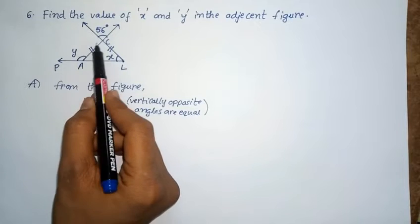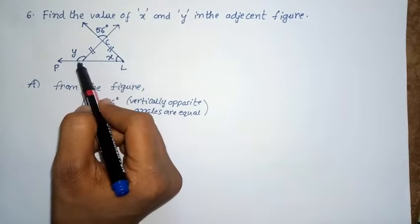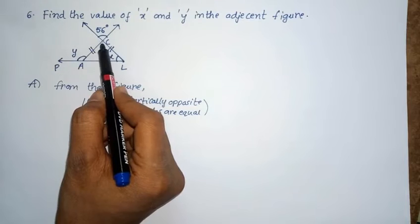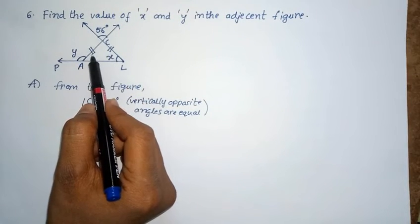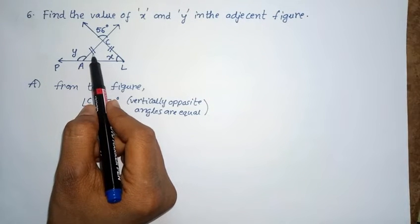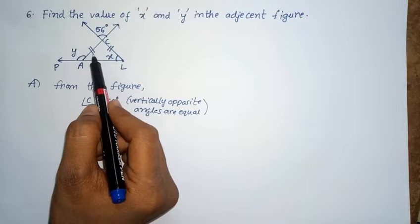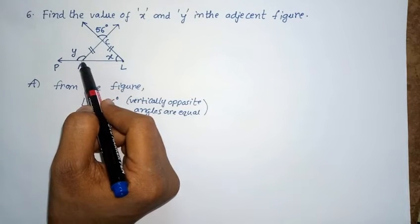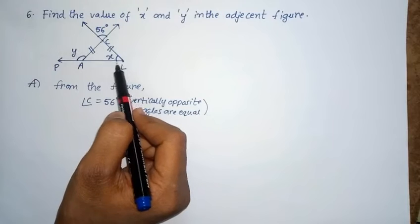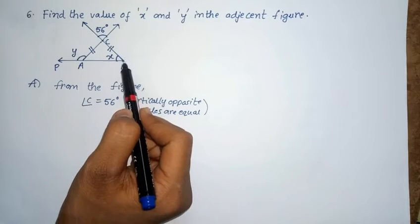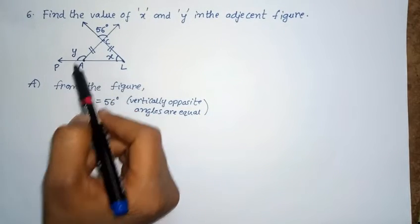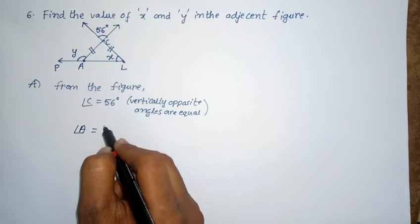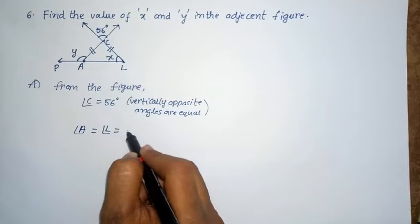Triangle ACL is an isosceles triangle because side AC equals side LC. Since opposite angles to equal sides are also equal, the side AC's opposite angle is angle L and side LC's opposite angle is angle A. These two angles are equal because of the isosceles triangle. So angle A equals angle L, both equal to X.